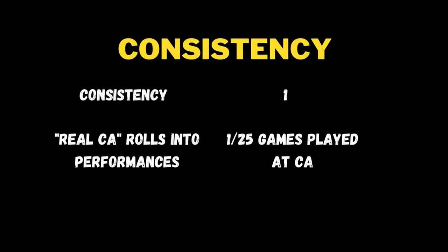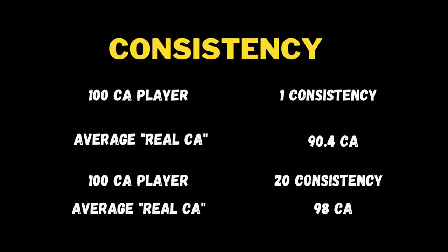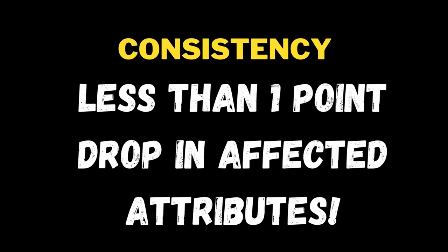Things like consistency affect the real current ability that happens in a game. Without some kind of modifier, you would see games where a player is getting 6.8 in average ratings all the way through with hardly any change. For example, a player with a consistency of 1 could be playing 1 out of 25 games at his current ability. Take a player with 100 current ability: if he has 1 consistency, his average real CA will probably be around 90.4. Give him 20 consistency and his average CA will probably be closer to 98. The difference between both players is barely 8 attribute points — loosely translated, this is less than a point drop in his attributes.